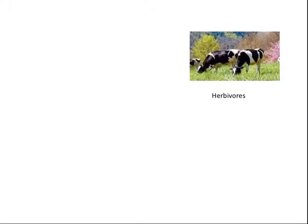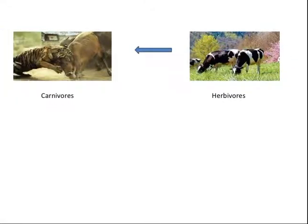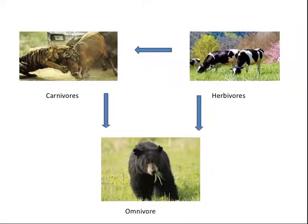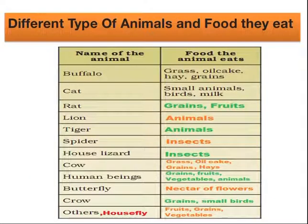To recap: herbivores are animals that eat plants, for example cow. Carnivores eat other animals. The third type of animal classification is omnivores — omnivores are animals which eat both plants and other animals.